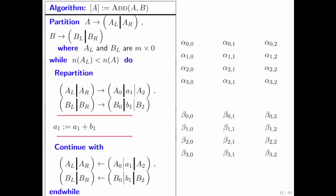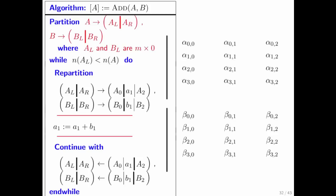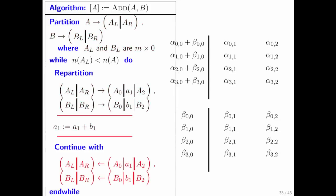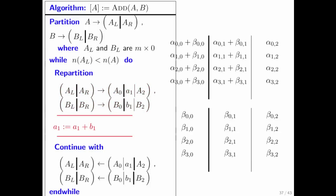We can look at an algorithm for adding matrix B to matrix A, overwriting matrix A. And the way that works is you partition, you expose, you add, move on, expose, add, move on, and you're done.